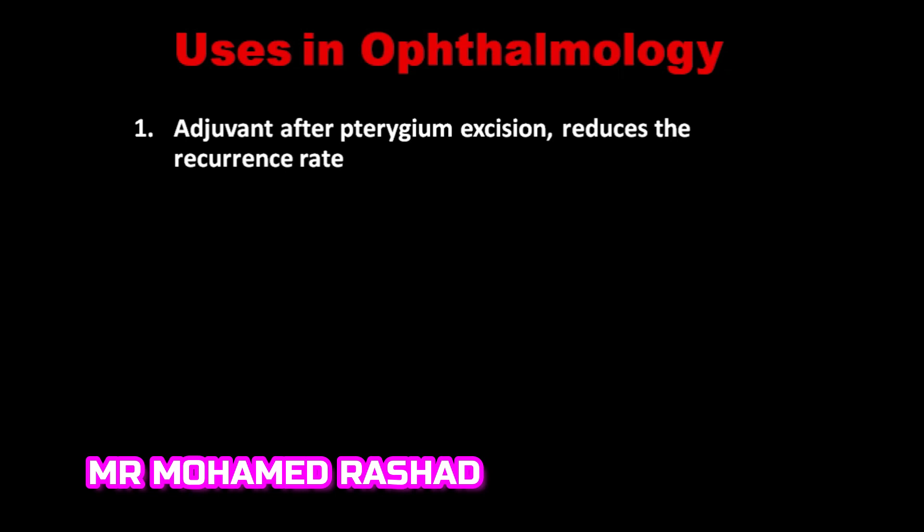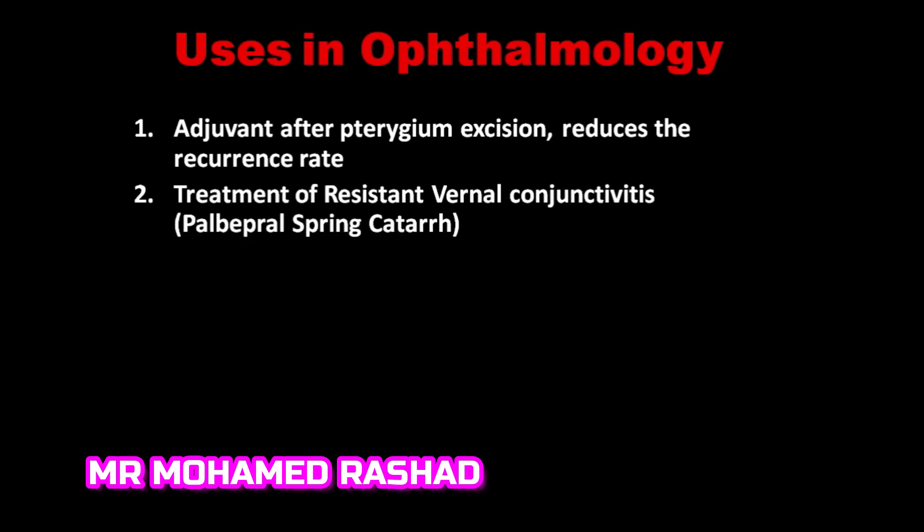The uses of beta irradiation in ophthalmology include: first, as an adjuvant after pterygium excision, which significantly reduces the recurrence rate. Although this is shown in this video, my preferred technique at present is conjunctival autograft or stem cell graft, as discussed in my previous videos. It can also be used in treatment of resistant vernal conjunctivitis, especially palpebral spring catarrh, using a different course of six sessions after shaving of the resistant eyelid papilla.